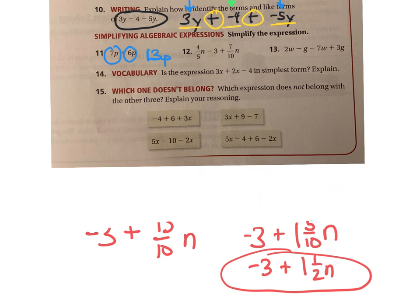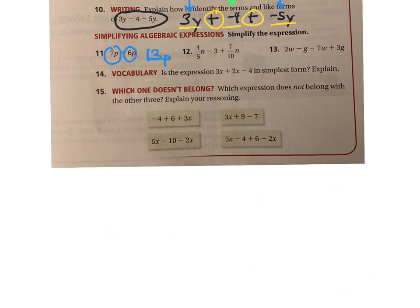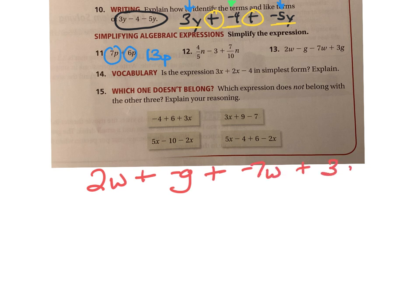Let's look at number 13. We have 2w minus g — I'm going to add the opposite, so I'm going to add a negative g — and then minus 7w, add a negative 7w, and then add 3g. So I have 4 terms: 2w, negative g, negative 7w, and 3g.